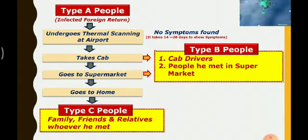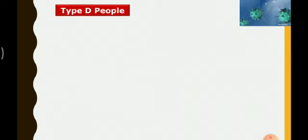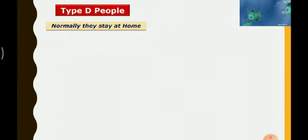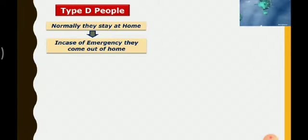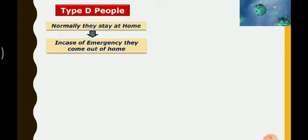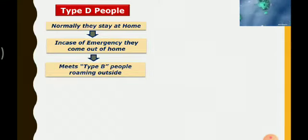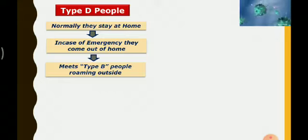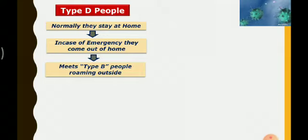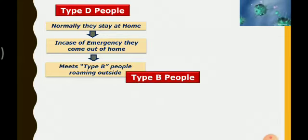So now you understand Types A, B, and C. Next is Type D. Type D people normally stay at home — they do not go anywhere and they obey government orders. In case of emergency, such as going to a hospital or for essential purchases, they will come out. When they do, they may meet Type B people who are roaming outside and get infected from them.